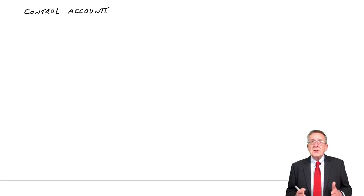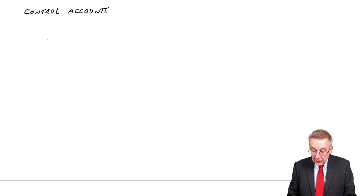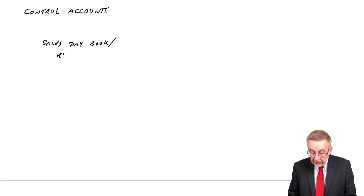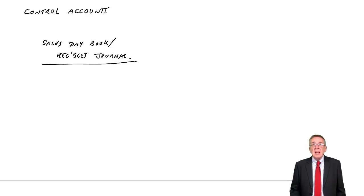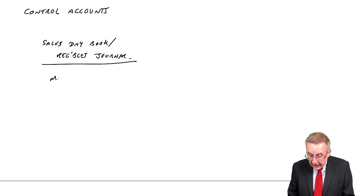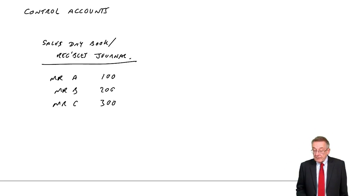Just suppose we were making some sales on credit. If you remember from books of prime entry, what we'd do first of all is we'd list them in the sales day book — or the receivables journal, same name, same thing. We'd list them, and perhaps we've made just three sales: Mr. A, we sold 100; Mr. B, 200; Mr. C, 300. Obviously there'll be loads more — I want to keep this very short. But all the way through the month we'd be listing the sales on credit.